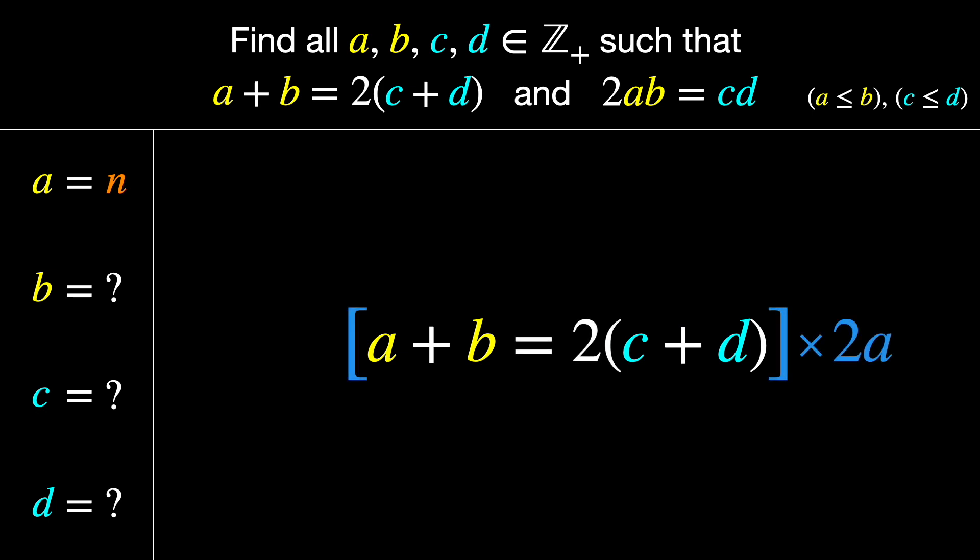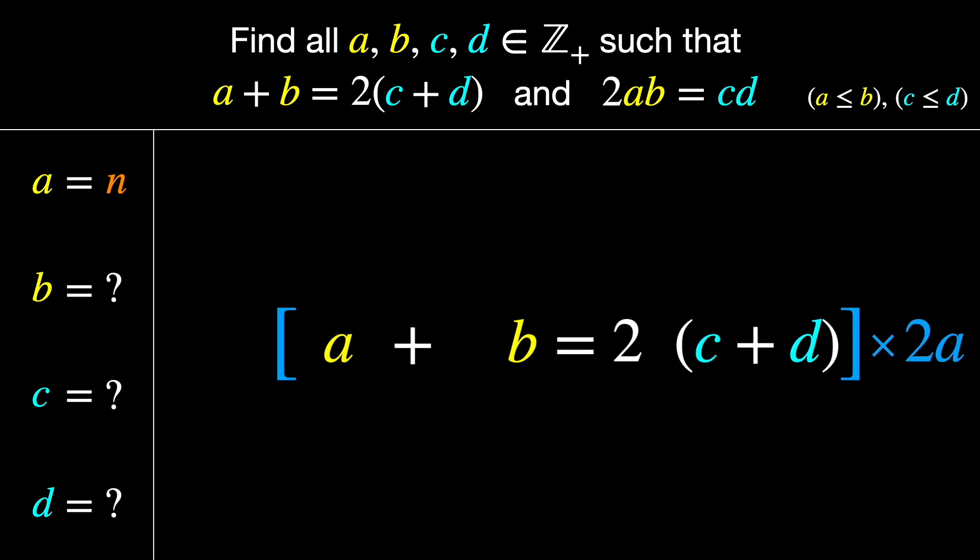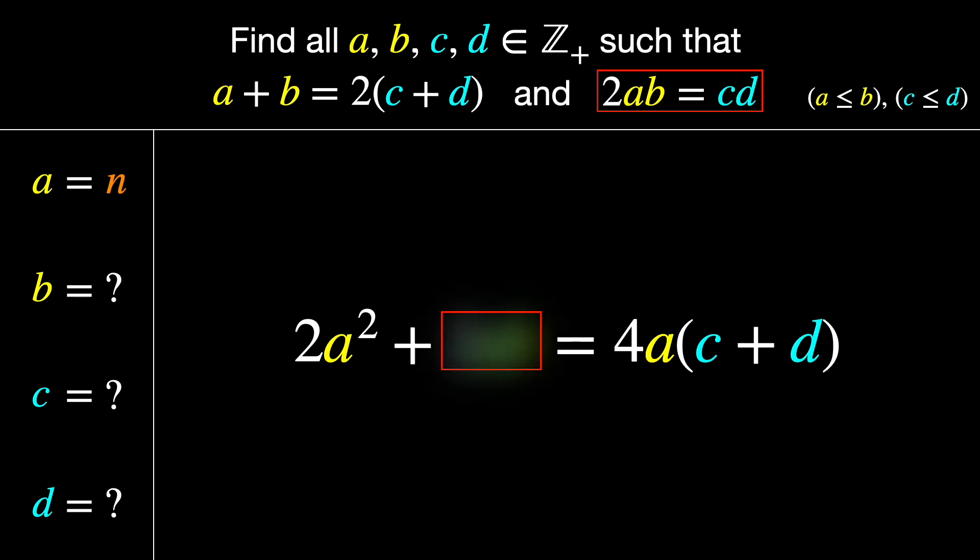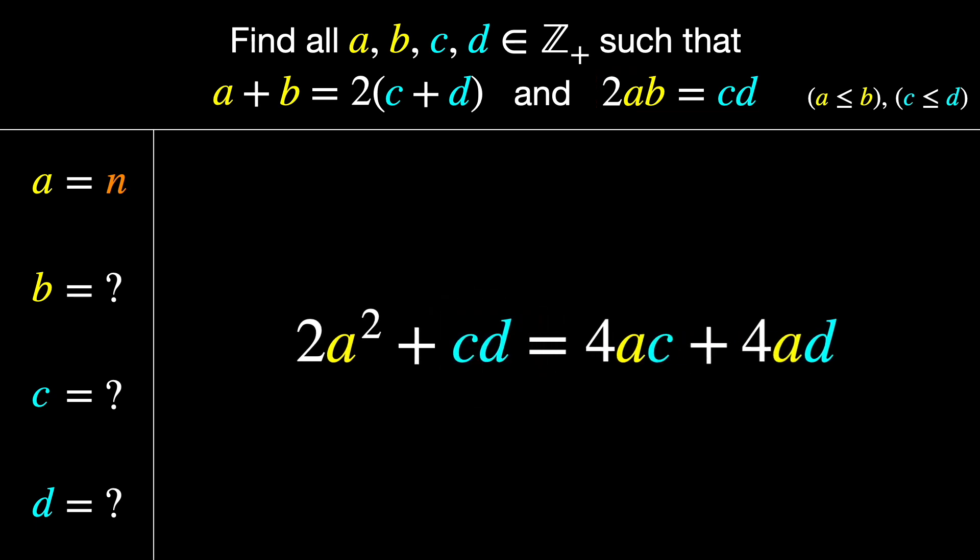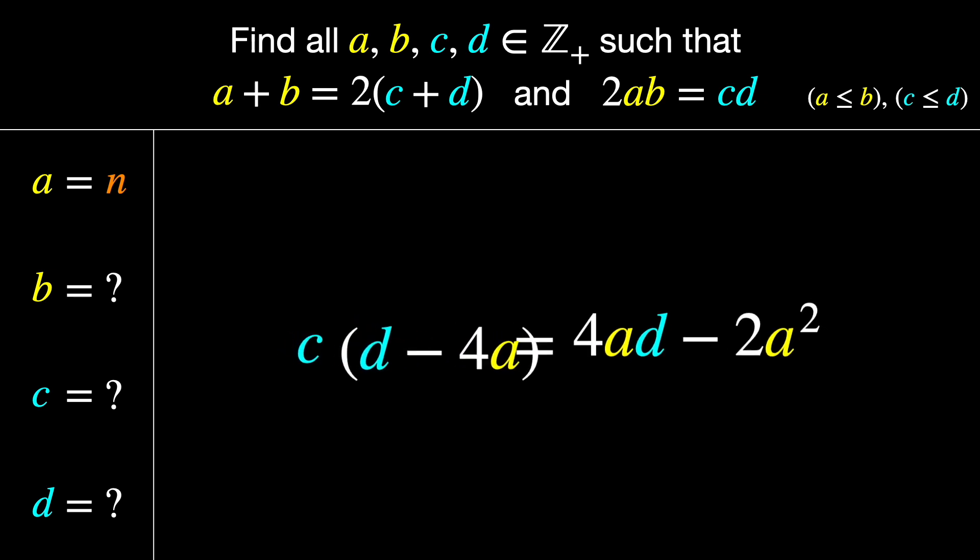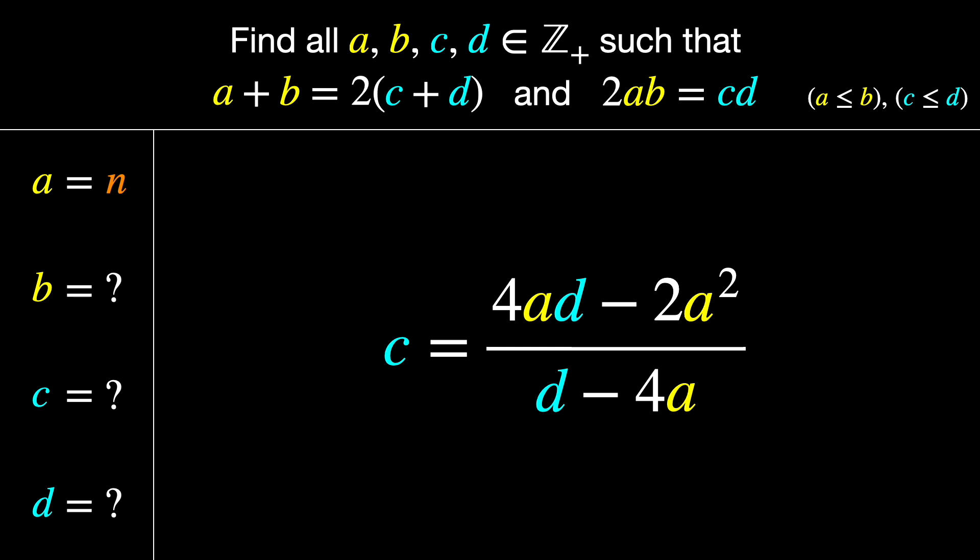Multiply it by 2a. Then use the area equation to substitute CD for 2ab. Then distribute the 4a. Collect the terms with C on the left-hand side. Factor out the C, and then divide by D minus 4a. And we can factor that 2a back out of the numerator. And there we have a potentially useful equation for C.